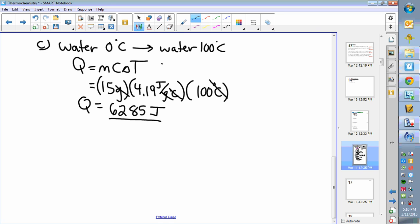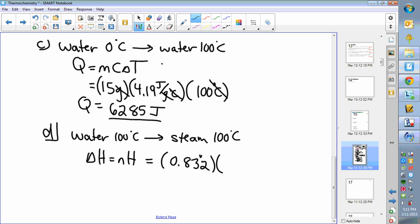That's the heat needed to raise water's temperature from 0 to 100. Two steps left. We're now taking water at 100 degrees and it's turning into steam at 100 degrees—no temperature change—we're into a delta h equals n h formula.